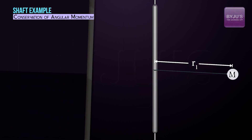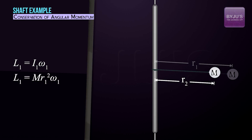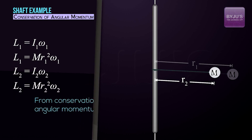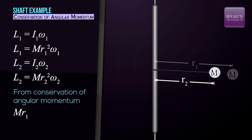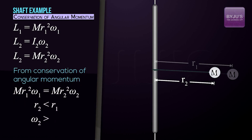Let the mass be m with initial radius r1 and initial angular velocity omega1. The initial angular momentum is I1·omega1 = m·r1²·omega1. When the radius reduces to r2, the angular momentum is m·r2²·omega2. By conservation of angular momentum, m·r1²·omega1 equals m·r2²·omega2. Since r2 is less than r1, omega2 must be greater than omega1 — this explains why the mass speeds up as the radius reduces.